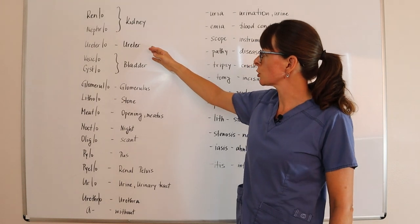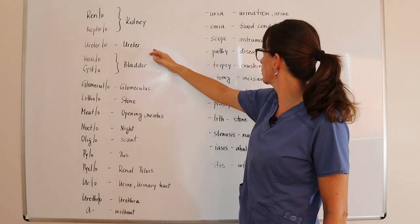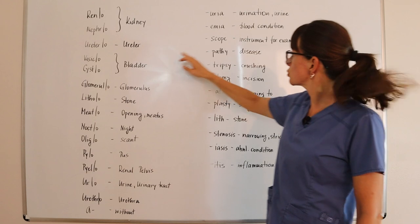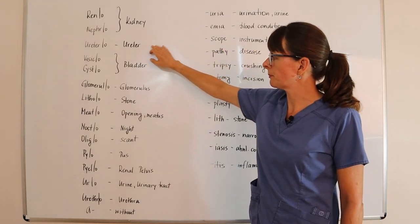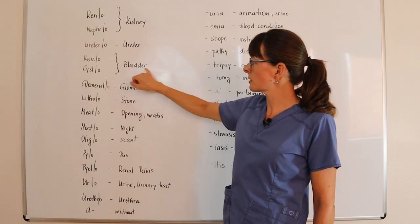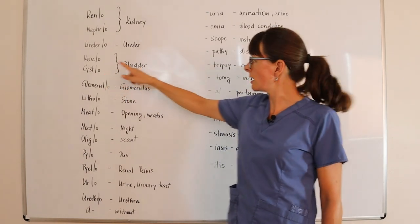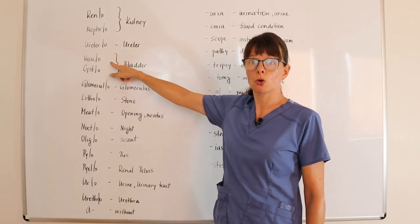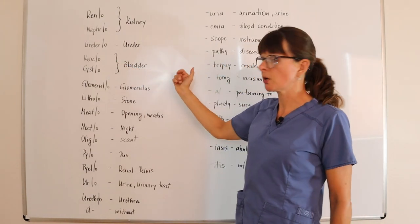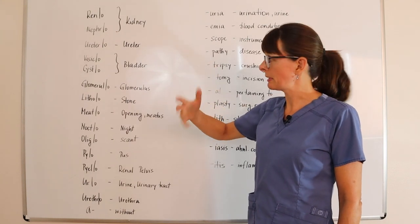Ureteral pertaining to the ureter, so we could have a ureteral scope, for example, an instrument to examine the ureter. Vesicle or cysto is the bladder; we could do a cystoscopy, cystoscope, or vesical gram. We don't have -gram here, but that would be an examination.